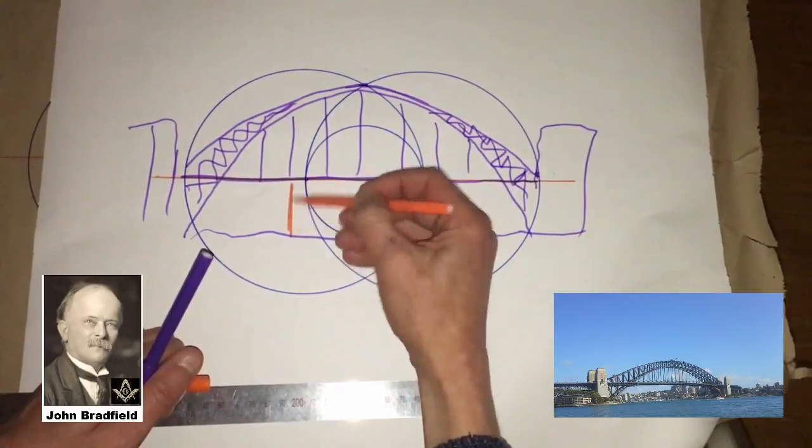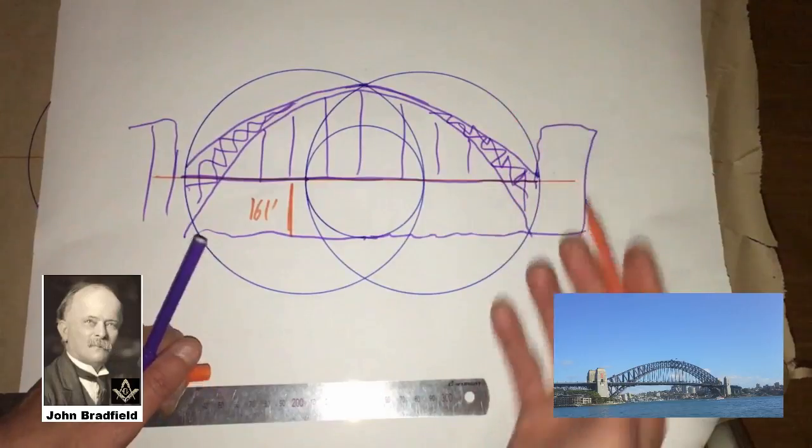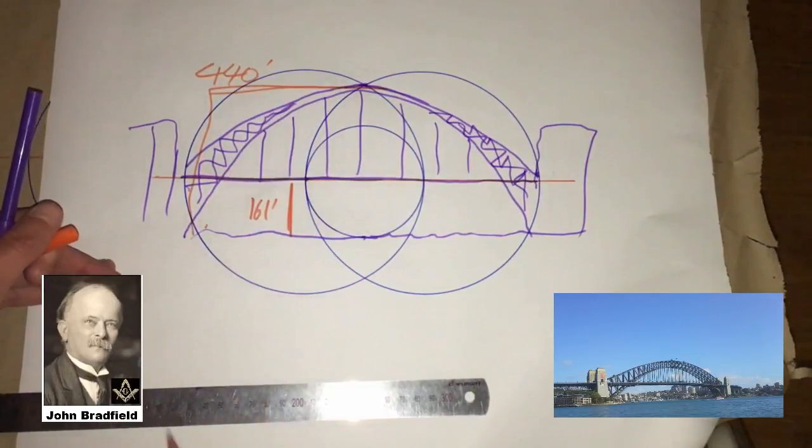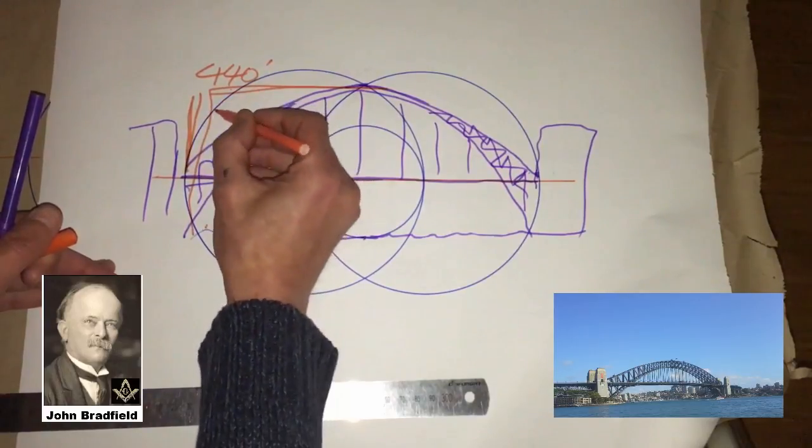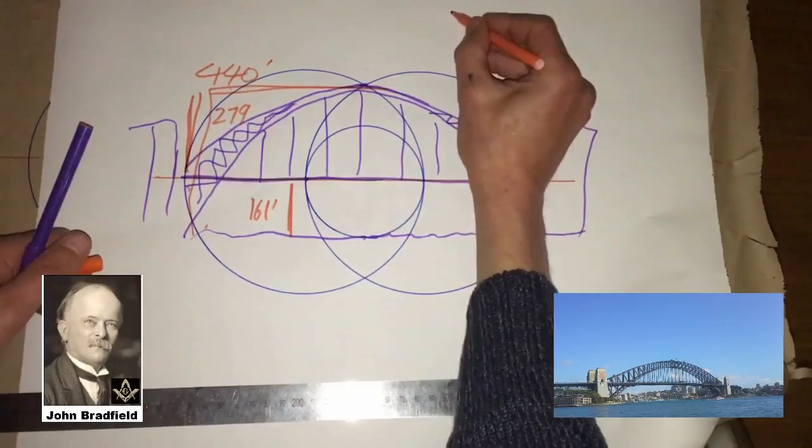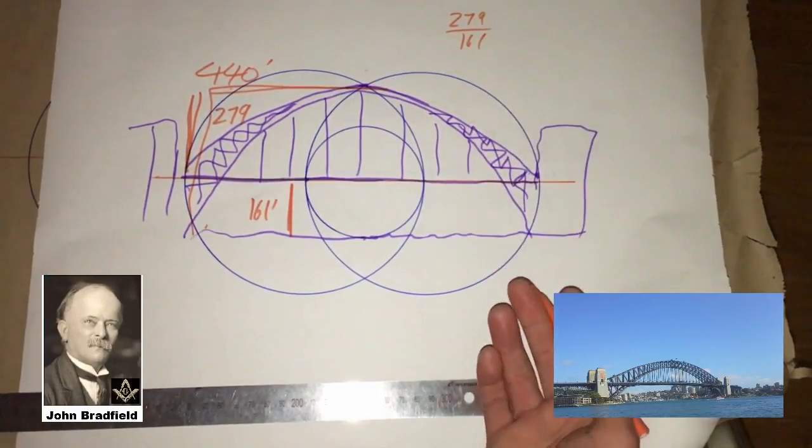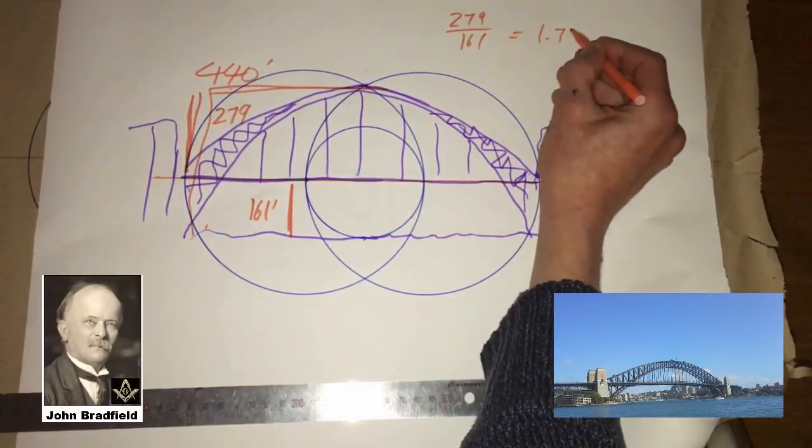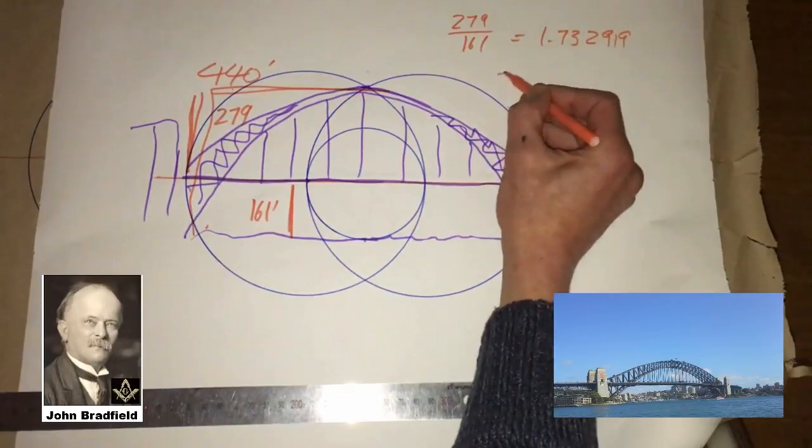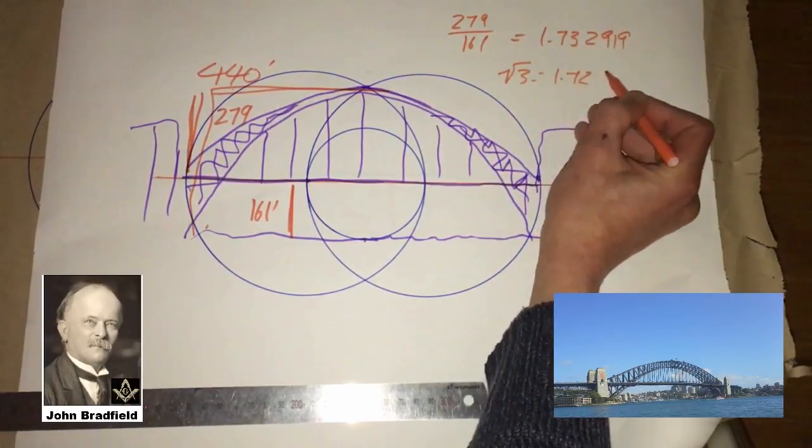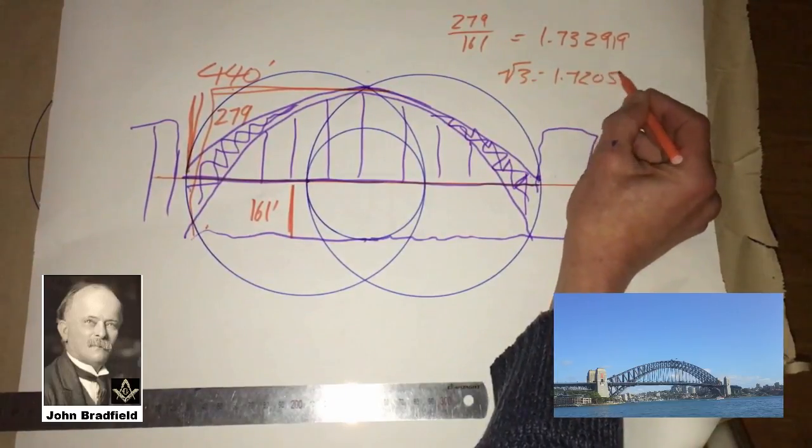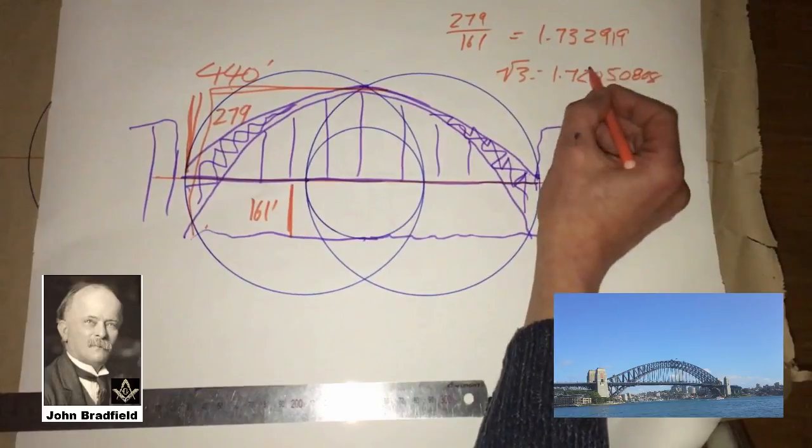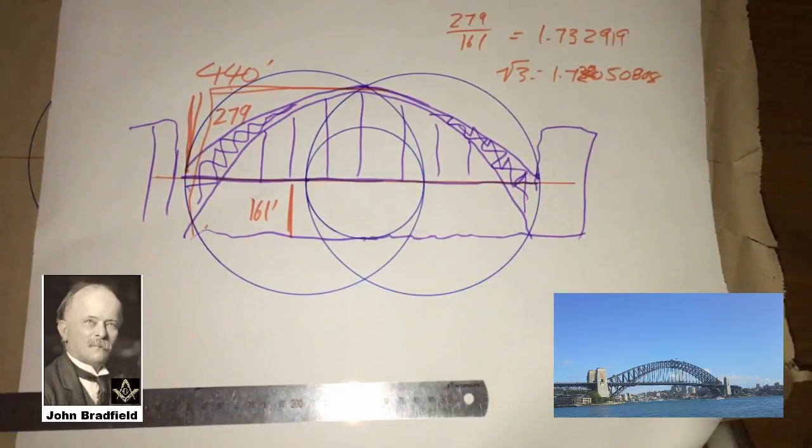We have these pylons on the side. The vesica is defining the Sydney Harbour Bridge. Now, from the water line to the deck is 161 feet. From the water line to the top of the bridge is 440 feet, which means from the top of the bridge to the deck is 279.